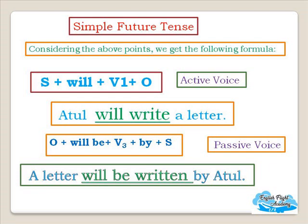Considering the above points, we get the following formula. Active voice: Subject + will + Verb 1 + Object. Example: 'Atul will write a letter.' When we convert it into passive voice, the formula is: Object + will be + Verb 3 + by + Subject. Example: 'A letter will be written by Atul.'